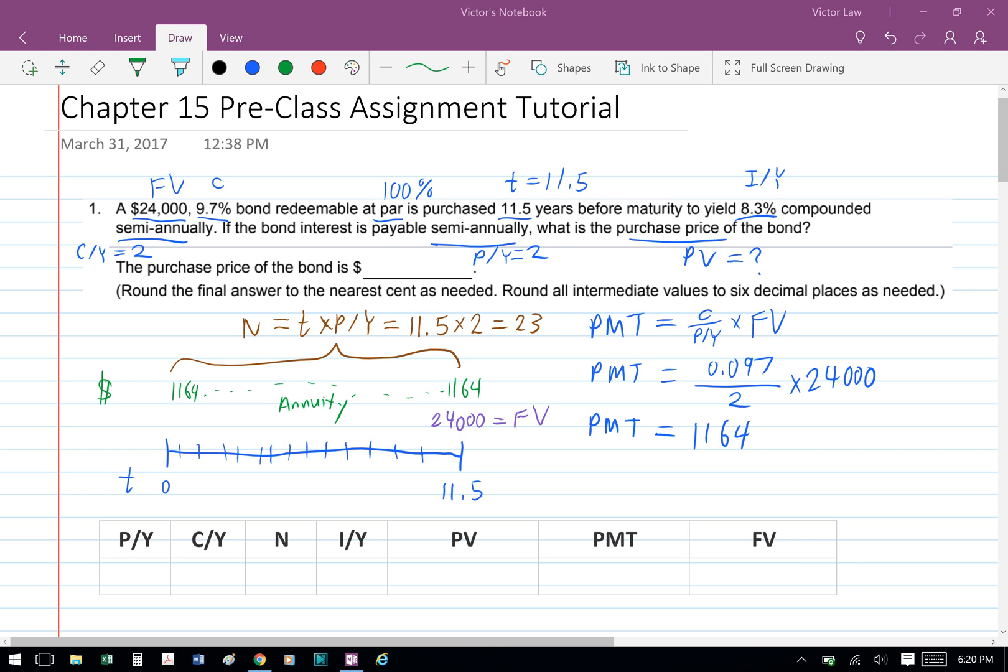Notice here that the annuity and the future value are money that you can get back. So therefore, they both have the same directions, same signs.